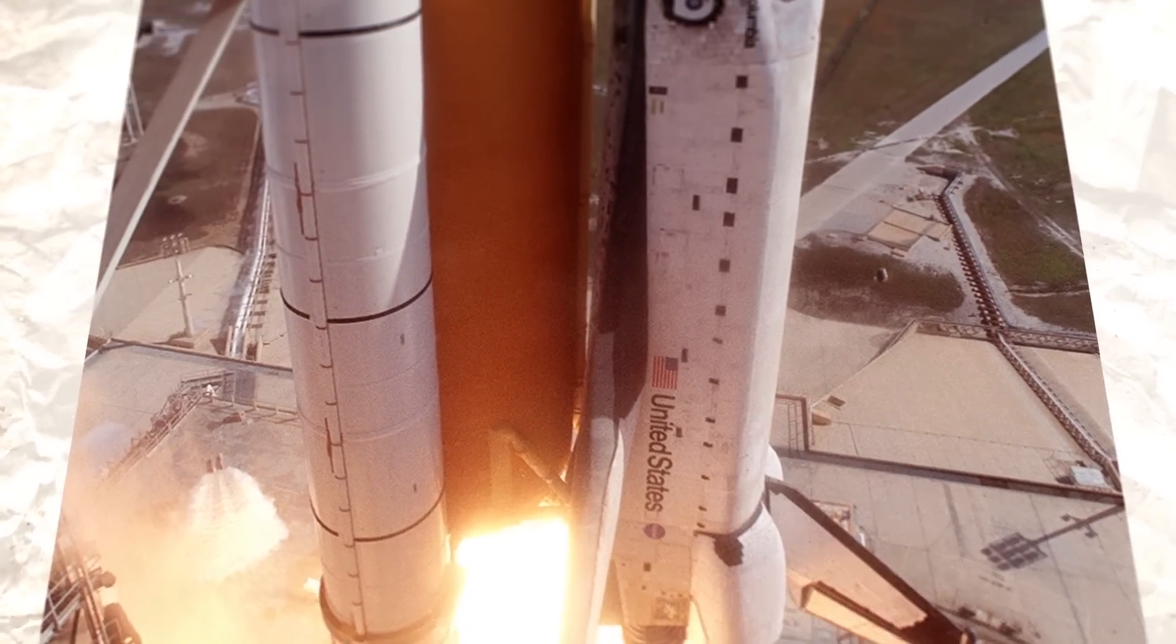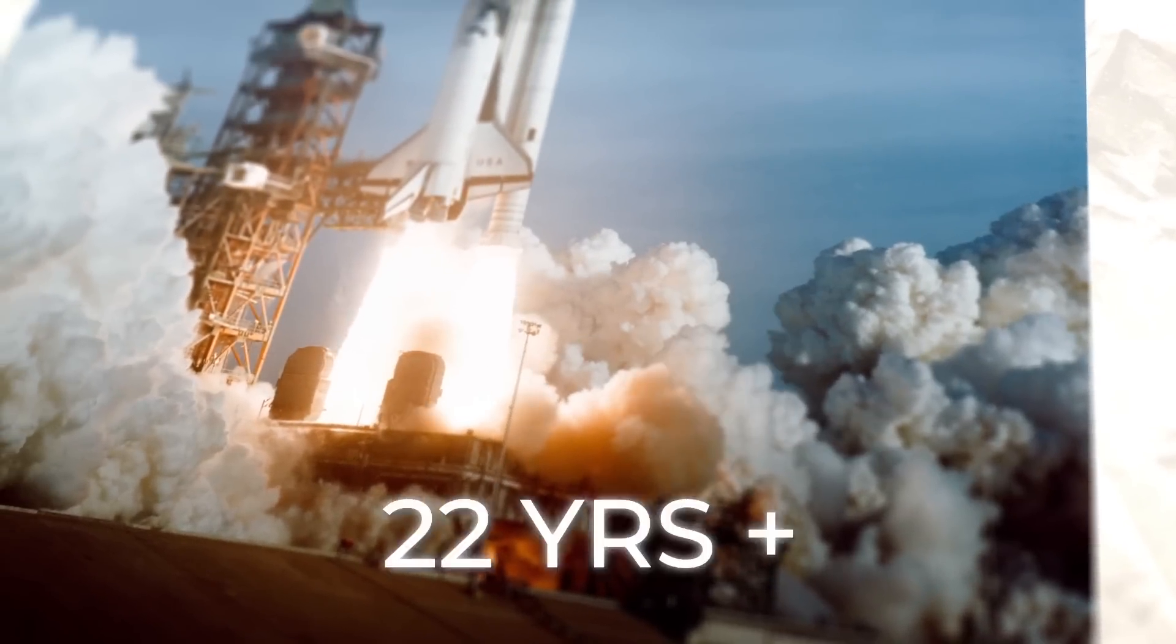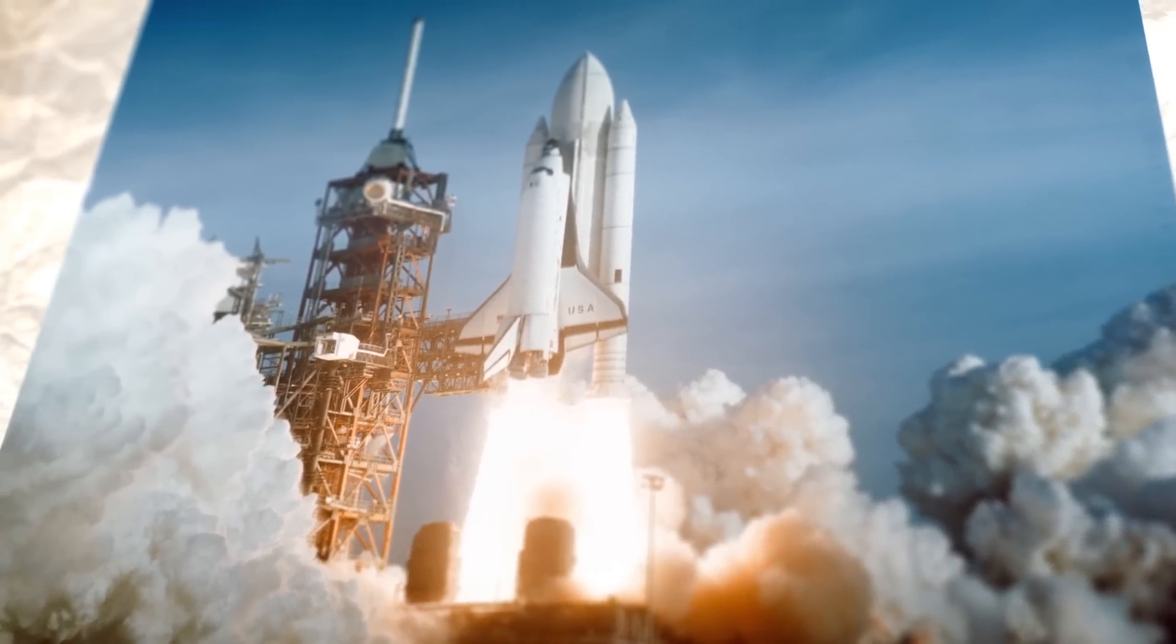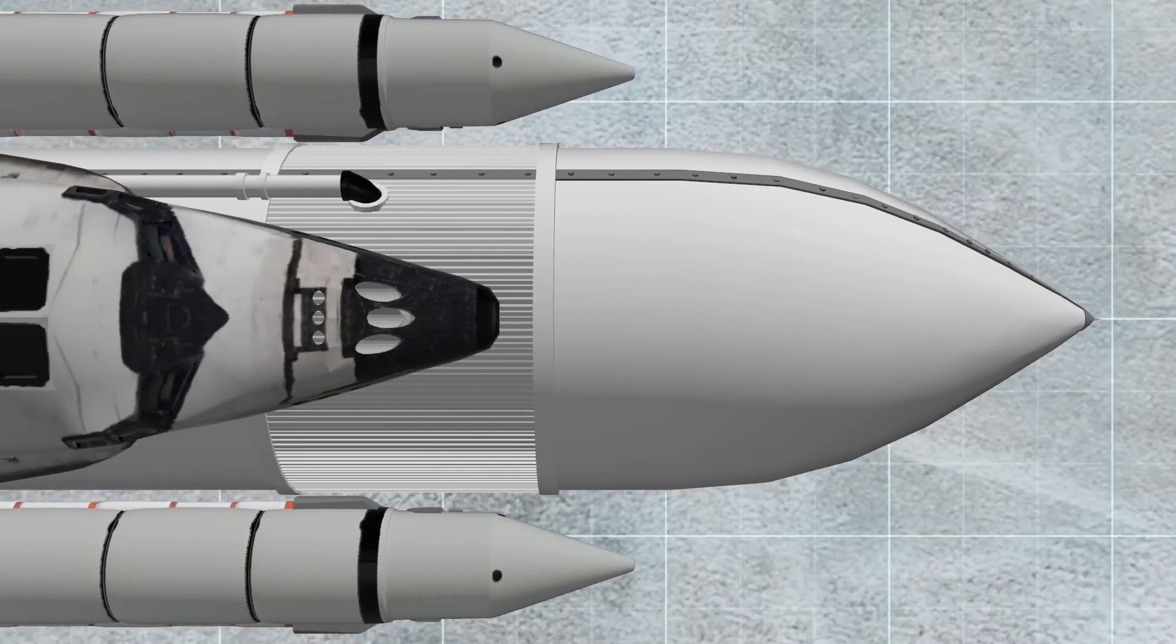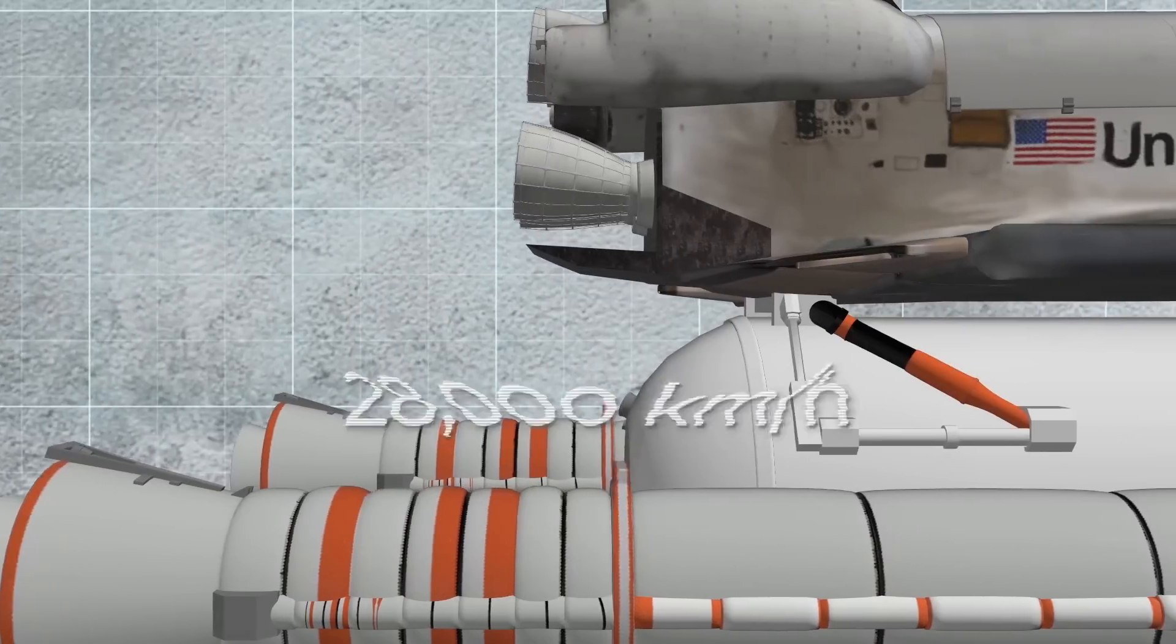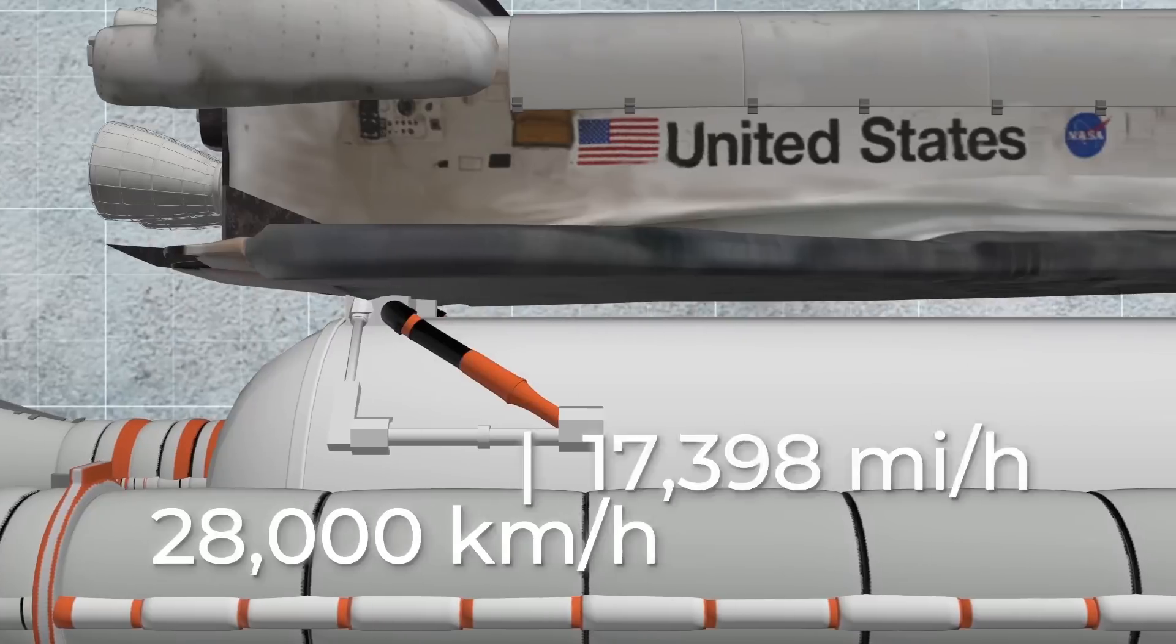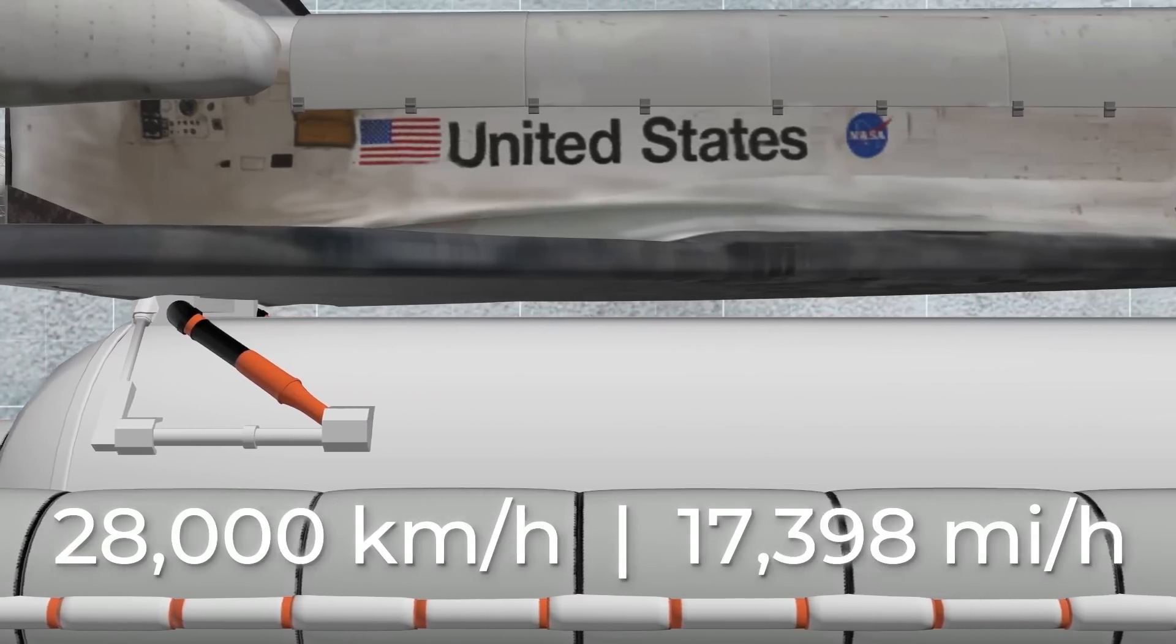But before these terrible events took place, the Space Shuttle had served for more than 22 years and could reach impressive speeds. According to open sources, the Shuttle accelerated to 28,000 km per hour. That's up to more than 17,000 miles per hour.